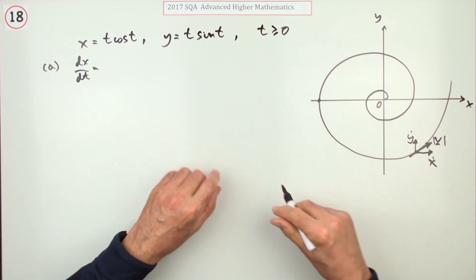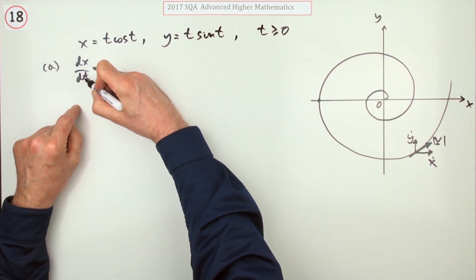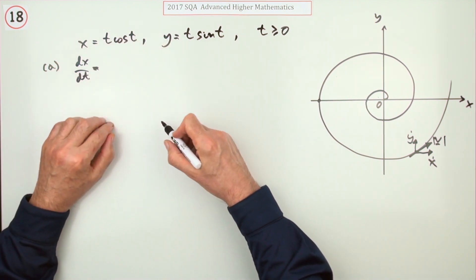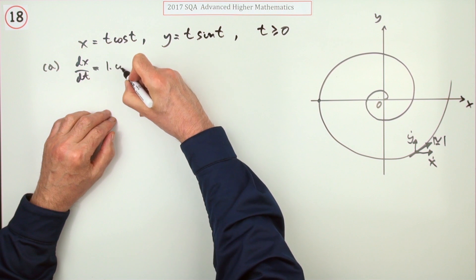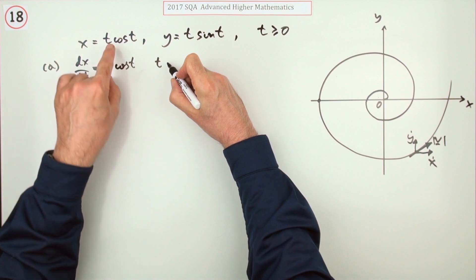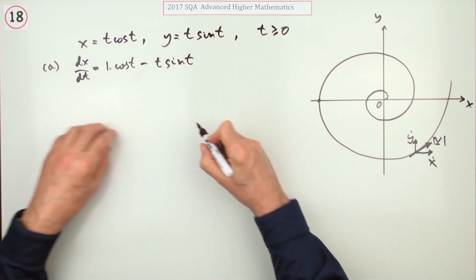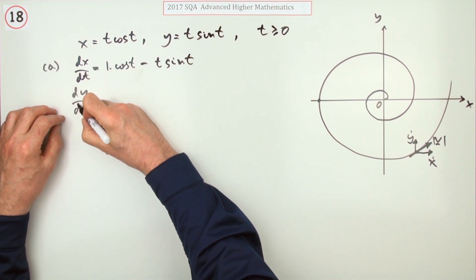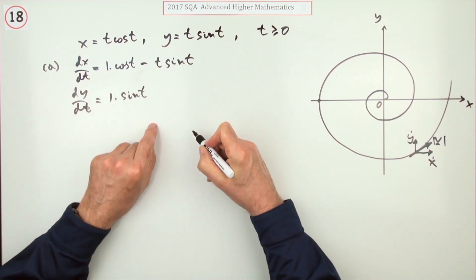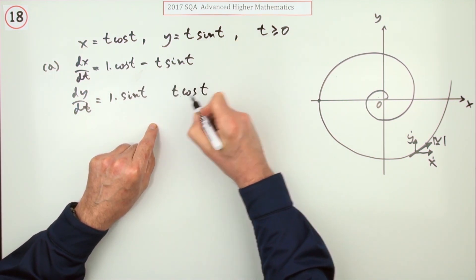If it says speed, it means what's the magnitude of that velocity, never mind its direction. The horizontal component will be differentiate this—that's a product, so product rule: 1 times cos t, then t times derivative of cos is sine t, but that'll be minus. Similarly, dy by dt will be the product rule: 1 times sine t, t times derivative of sine goes to cos t, so that'll be a plus.